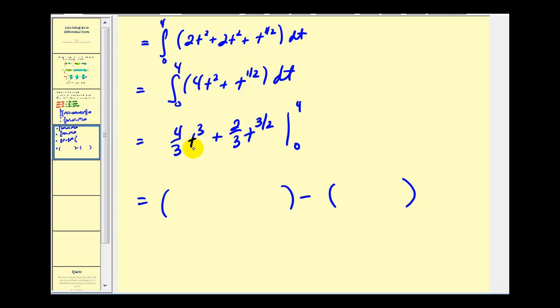So when t is four, we'll have four-thirds times four to the third plus two-thirds times four to the three-halves. And then when t is zero, these are both zero. This is going to give us 256-thirds plus four to the three-halves equals eight. Eight times two-thirds will give us 16-thirds. So the sum would be 272-thirds.